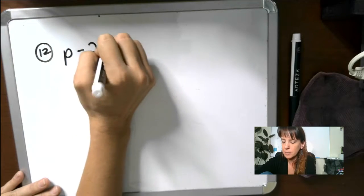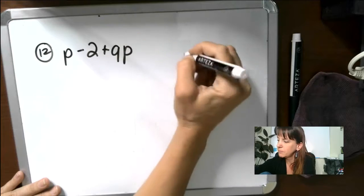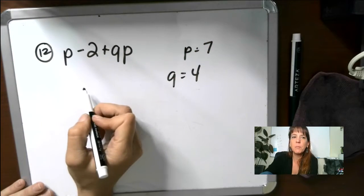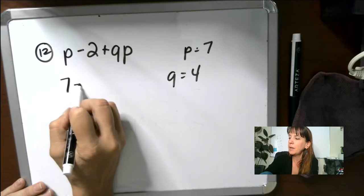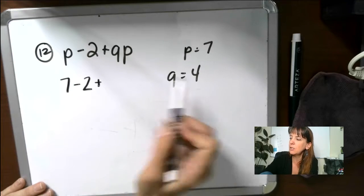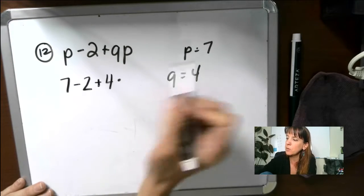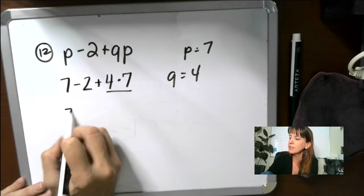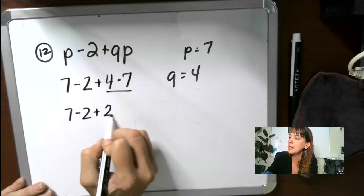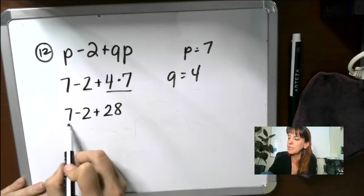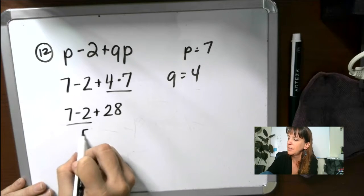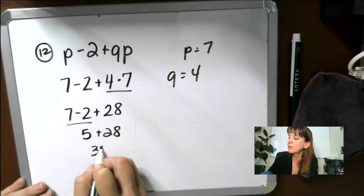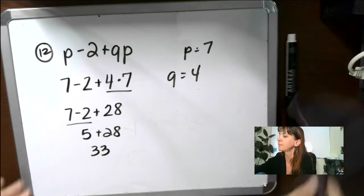All right, let's do 12. P minus 2 plus QP. So P equals 7, Q equals 4. So we're going to do for our P is 7 minus 2 plus Q is 4 times P, which is 7. Again, we want to do our multiplication first. We got that guy here. 7 minus 2 plus 28. And now we're going to do 7 minus 2. That gives us 5 plus 28. That gives us 33.